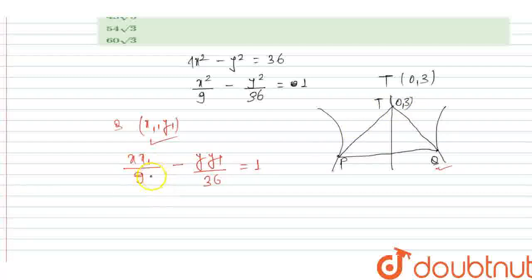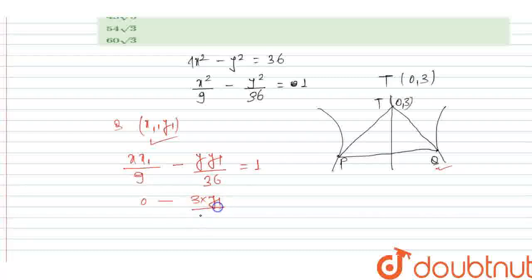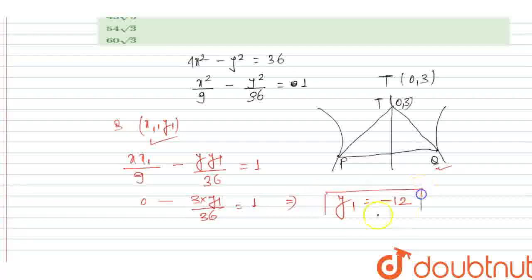Substituting x=0 and y=3 into the tangent equation: 0 - 3·y₁/36 = 1, so -3y₁/36 = 1. From here we get y₁ = -12. Therefore the y-coordinate of Q is -12.